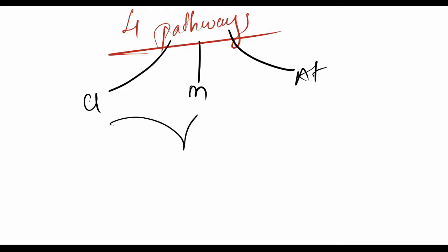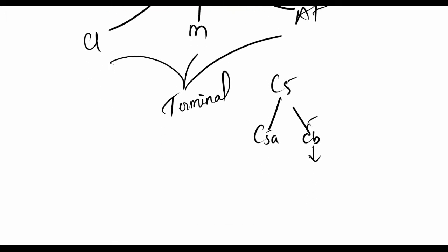What's the terminal pathway? Initially, C5 splits into C5a and C5b, and C5b later gets added to some other complexes and forms MAC - the membrane attacking complex - which causes lysis of the enemy cell.